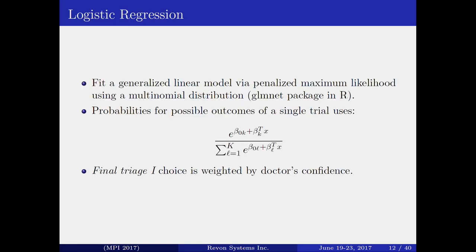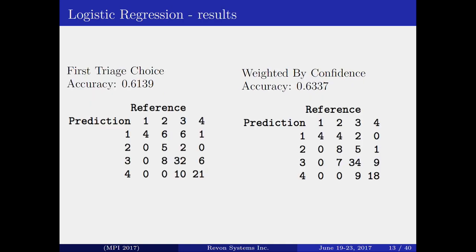For the logistic regression model, it fits a generalized linear model, and the probability distribution is given by the standard formula. We considered only the first triage decision and its confidence, not the second triage or its confidence. The error for the triage decision with confidence was 0.61, and 0.63 for the other case. At some important places in the confusion matrix, we are getting zeros.